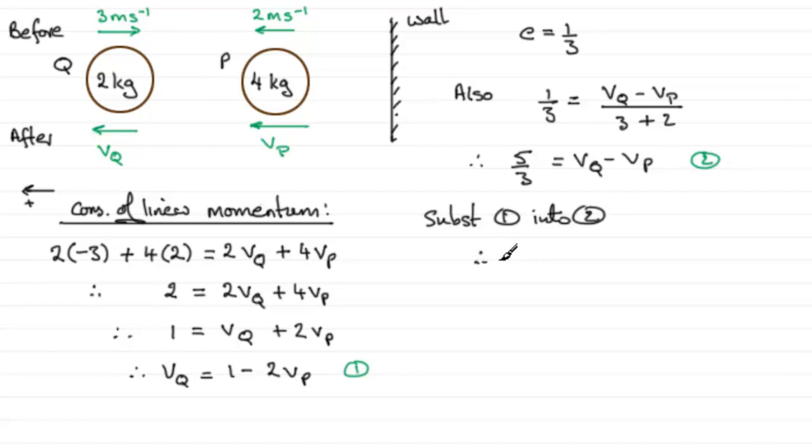And if we do that, we therefore have 5 thirds equals VQ, which is 1 minus 2VP, minus the further VP. So we therefore have 1 minus 3VP equals that 5 thirds. And if we subtract 1 from both sides, we therefore have minus 3VP equals 5 thirds minus 1, which is going to be 2 thirds. And if we now divide by minus 3, we end up with VP equaling minus 2 ninths. Minus 2 ninths meters per second. But the point that we wanted was that we've got a negative sign here. And it's in the opposite sense to our positive direction.